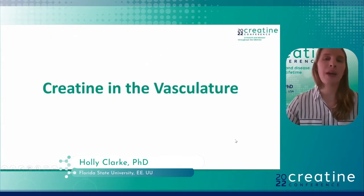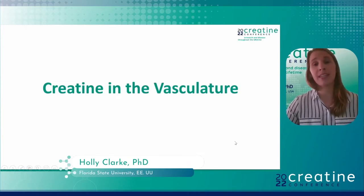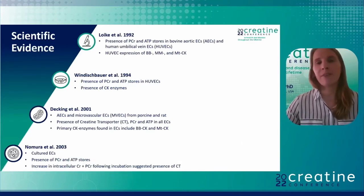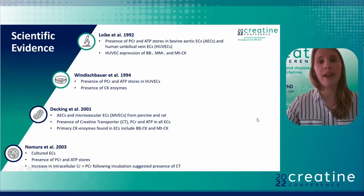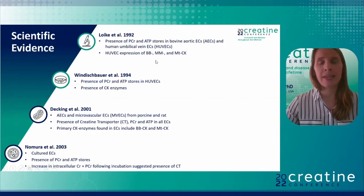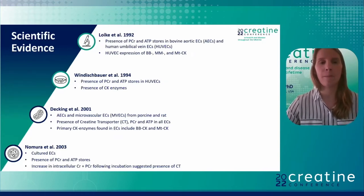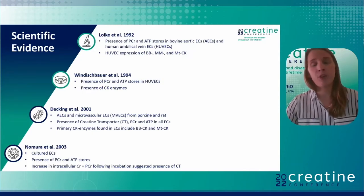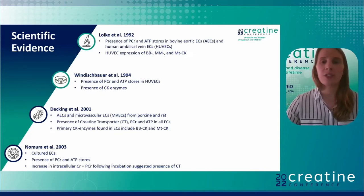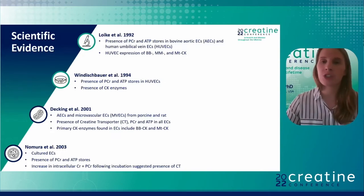Before I get into how creatine could benefit vascular health, let me show the research demonstrating that creatine is in the vasculature. Leucatel in 1992 found phosphocreatine and ATP stores within bovine aortic endothelial cells and human umbilical vein endothelial cells, as well as expression of the isoenzymes BB, MM, and mitochondrial creatine kinase. Winderspauer et al. in 1994 also found phosphocreatine and ATP in human umbilical vein endothelial cells plus the creatine kinase enzyme. Decking showed creatine, phosphocreatine, ATP, and the creatine transporter within aortic and microvascular endothelial cells. Nomura et al. in 2003 found the same in cultured cells.